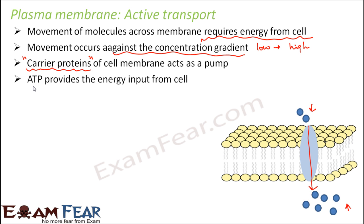ATP molecules are produced as a result of cellular respiration — aerobic respiration produces around 38 ATP molecules per cycle. These ATP molecules are the energy currencies of the cell. When ATP is spent, energy input from the cell is used. The cell has to spend some of its ATP in active transport, which is why this type of movement is called active transport.